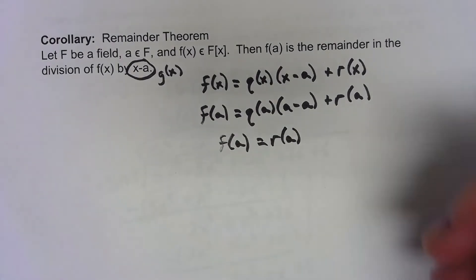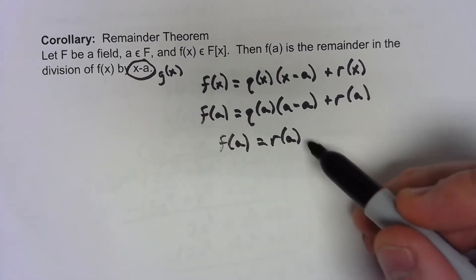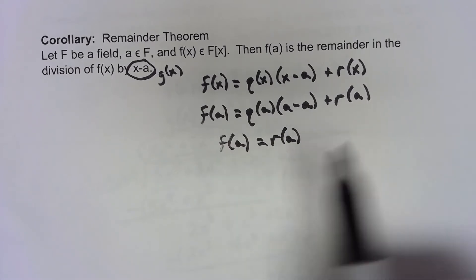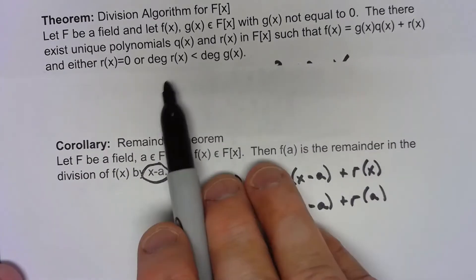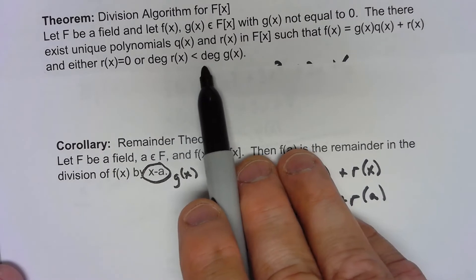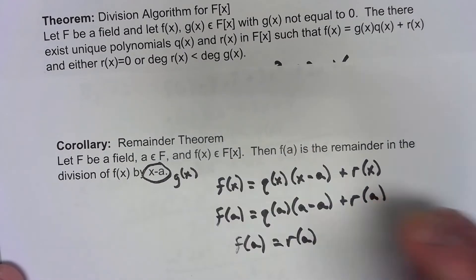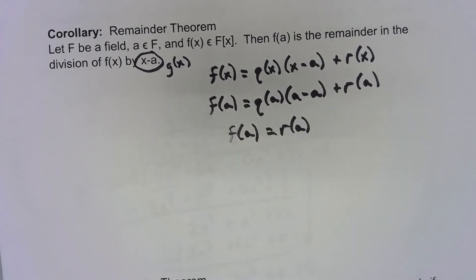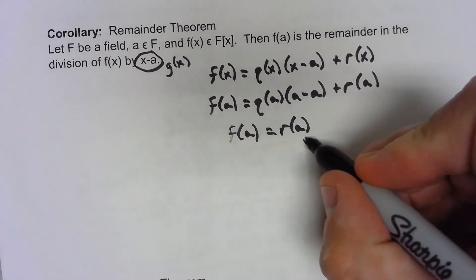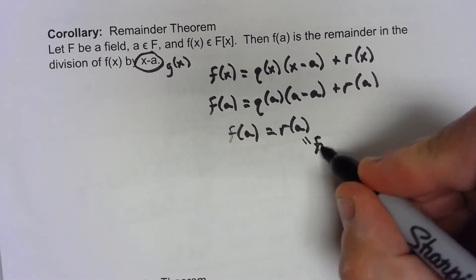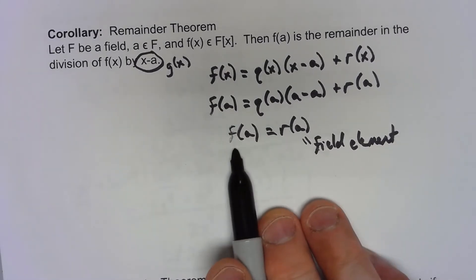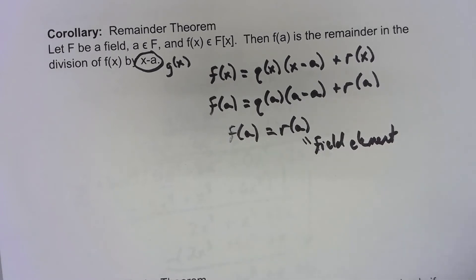Now in general r(x) is a polynomial and this would just give you that when I evaluate that polynomial I get the same thing as when I evaluate f(A). But also remember that in the division algorithm the degree of the remainder has to be less than the degree of g, and g is a first degree polynomial. So that means that r is just a constant, is just a field element. So there we go, we get a field element out of f(A). It has to equal the field element that is r and there we have it.